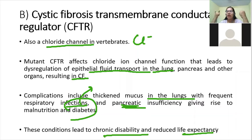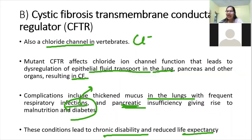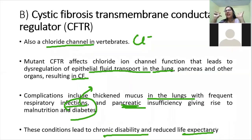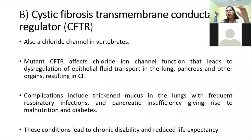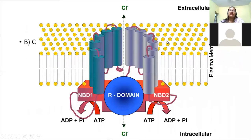Many CF patients must carry oxygen cylinders wherever they go — just like the heroine in the movie Dil Bechara who always carries an oxygen cylinder. The CFTR structure, like other ABC transporters, has six alpha helices plus another six alpha helices — twelve in total — along with two NBD domains. The key difference is that CFTR also has an R domain: the regulatory domain.